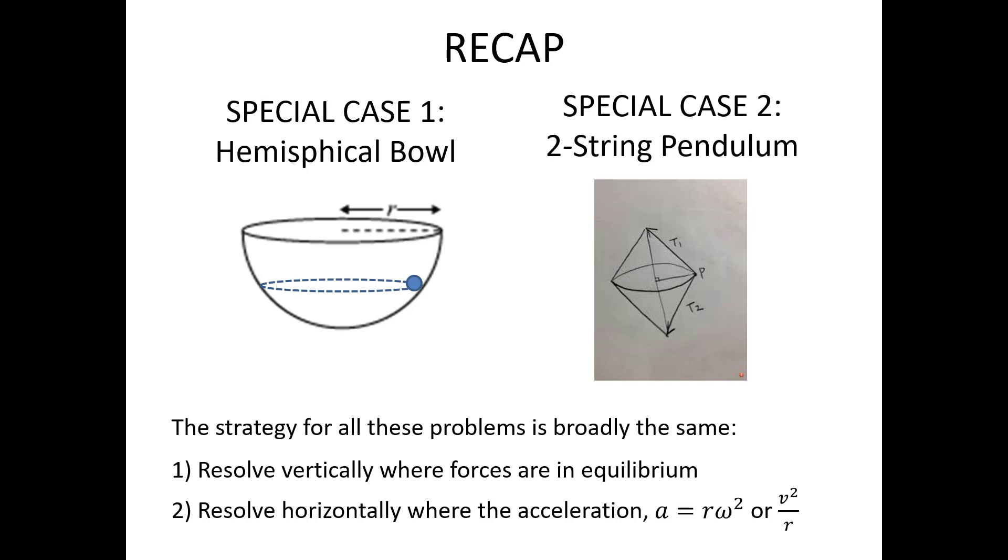First of all, resolve vertically and use the fact that the horizontal motion means the vertical forces are in equilibrium. Then apply F equals ma to the net horizontal force and use one or other of the equations you have for radial acceleration. And that's it for this final video on horizontal circular motion.